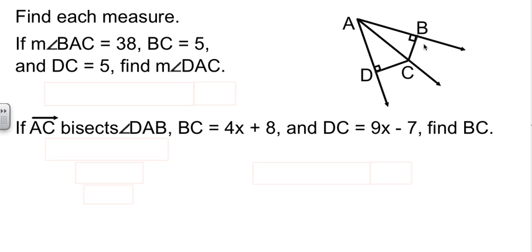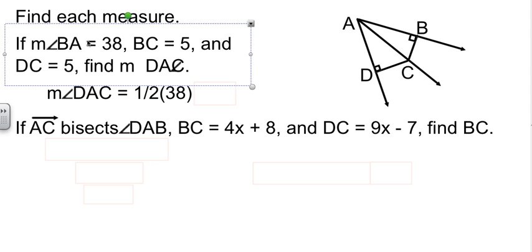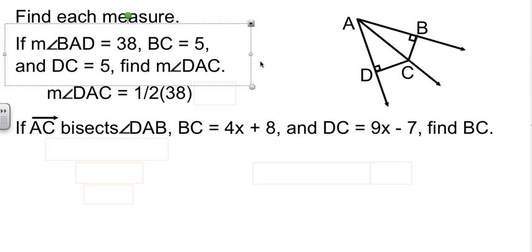Since that's equidistant, that means this line, AC, is an angle bisector. Well, in that case, angle DAC... This should say BAD, not BAC. First mistake I ever made. Angle DAC is half of the whole big angle. So, half of 38 is 19.